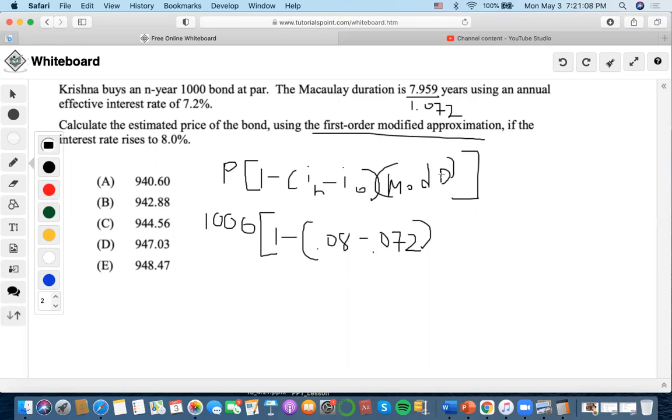So it's going to be 7.424. Now we can solve. So let's do 0.08 minus 0.072, which is 0.008. We're going to multiply it by 7.424, and we're going to get 0.059392, and we subtract from 1. We're going to do 0.940608, and we're going to multiply it by a thousand, and we're going to end up getting 940.608.